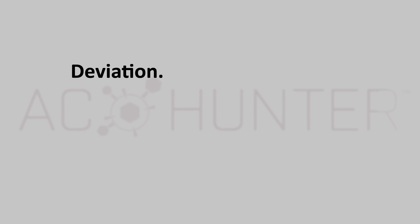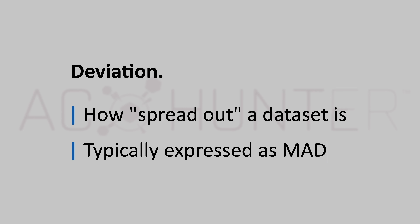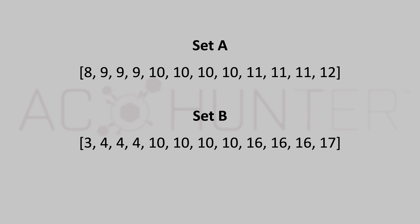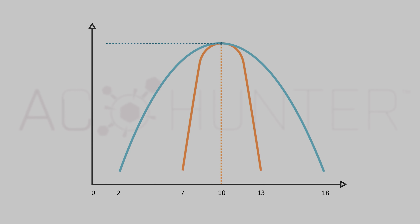Next, let's discuss deviation, which describes how spread out a data set is — often expressed as MAD, that is median absolute deviation. Consider two sets: set A and set B. If we calculate the mean and mode for both, they're identical — both equal to ten. However, the numbers in set A are clustered together while those in B are much further apart. Plotting how often each number appears, set A appears relatively narrow while set B is relatively broad, showing that set A has much lower deviation — its numbers deviate less from the mean than set B.